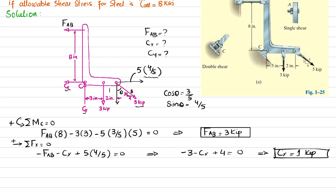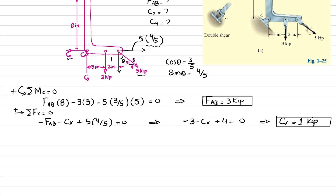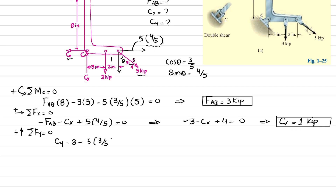Using the equilibrium equation that the sum of all forces along the y-direction equals zero, with upward forces positive: Cy is upward, while the 3 kips load and the vertical component of the 5 kips force (5 × 3/5 = 3 kips) are downward. So: Cy − 3 − 5 × (3/5) = 0, giving Cy = 6 kips.